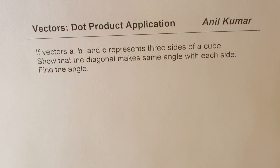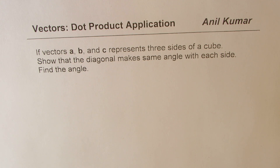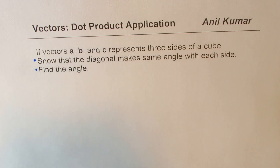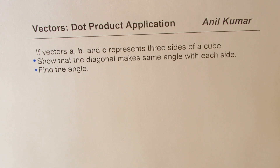The question is: if vectors a, b, and c represent three sides of a cube, show that the diagonal makes the same angle with each side, and find the angles. So we have two parts — first, show that the diagonal makes the same angle with each and every side, and second, find the angle.